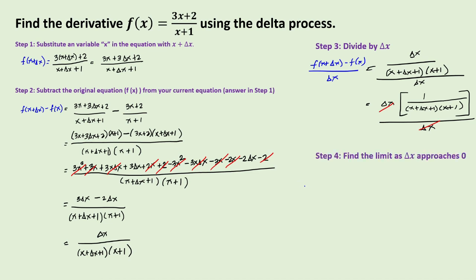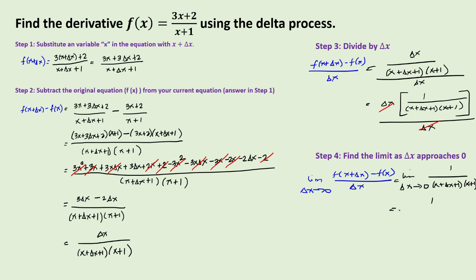For step four, we find the limit of f of x plus delta x minus f of x over delta x as delta x approaches zero. From our answer in step three, we substitute delta x equals zero, giving 1 over x plus 0 plus 1 times x plus 1. Therefore, f prime of x is equal to 1 over the square of x plus 1.